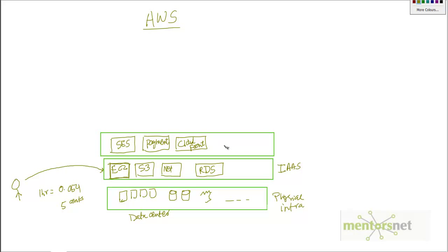Similarly, if you are building an application that requires a queue, instead of provisioning an EC2 instance and installing RabbitMQ or IBM's queuing services, you can use Amazon SQS. With just two lines of code you can use Amazon Simple Queuing Service. This is what they call Software as a Service.